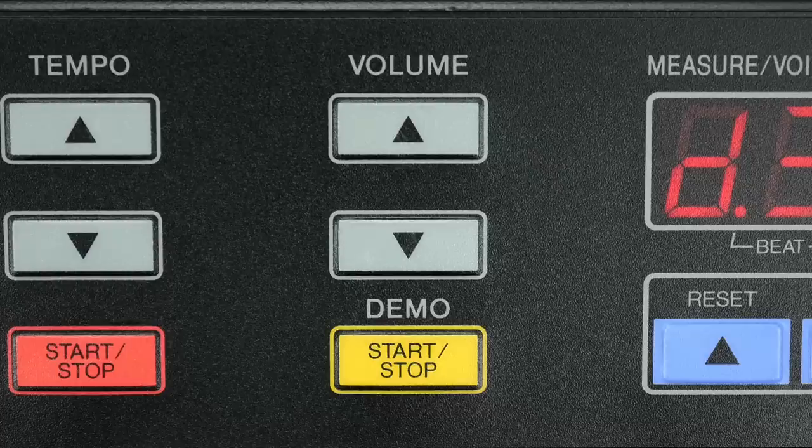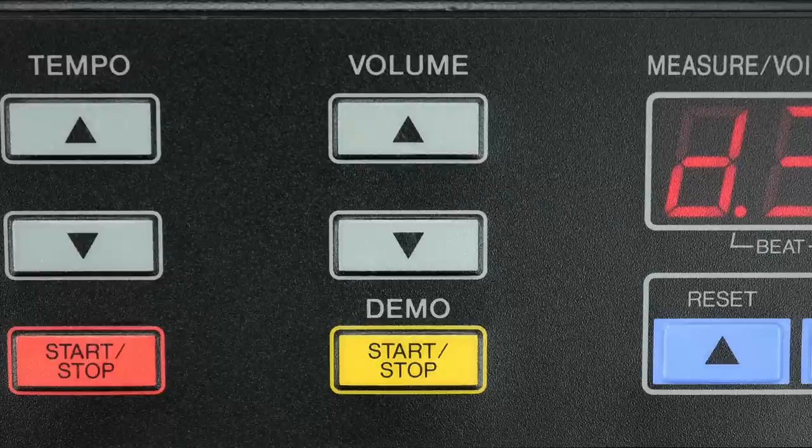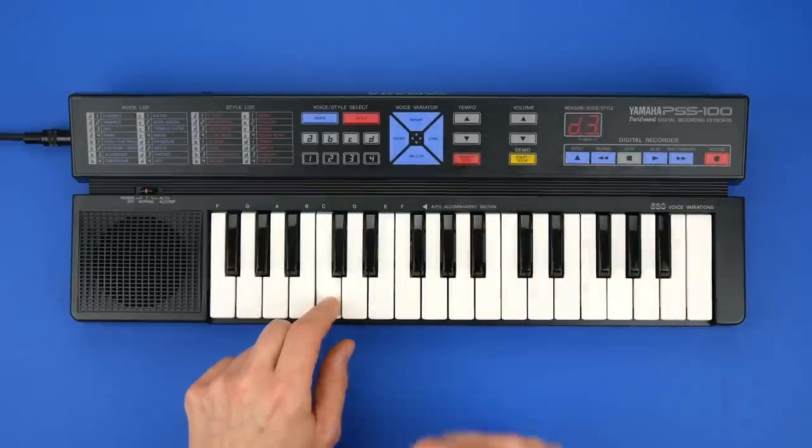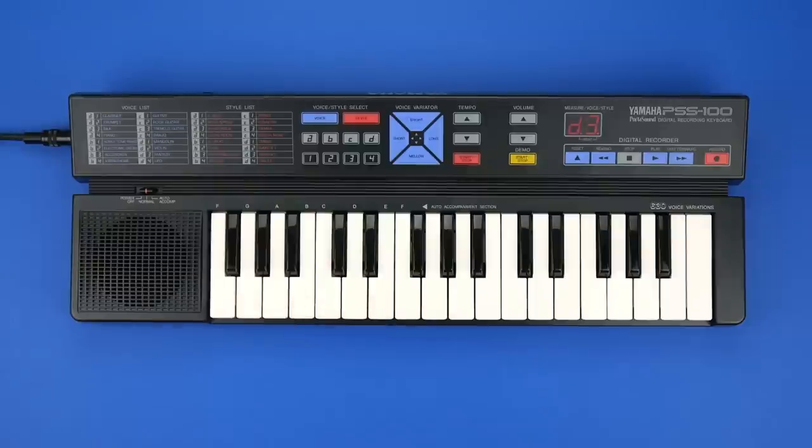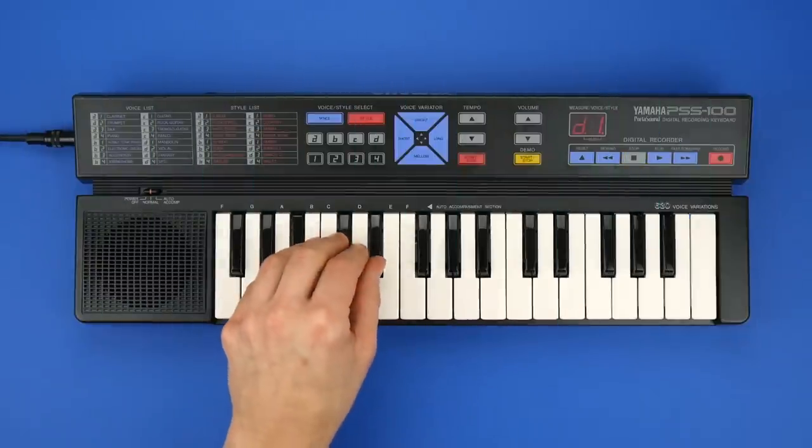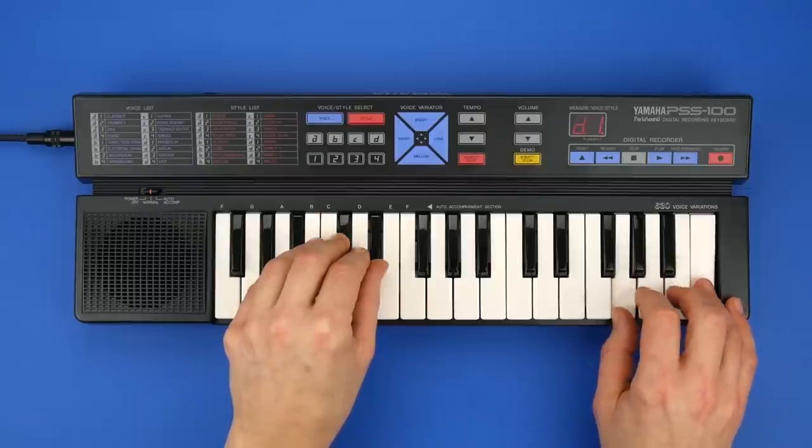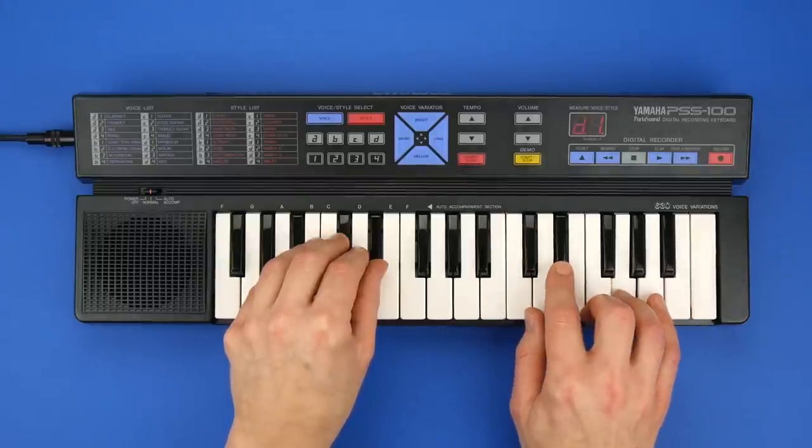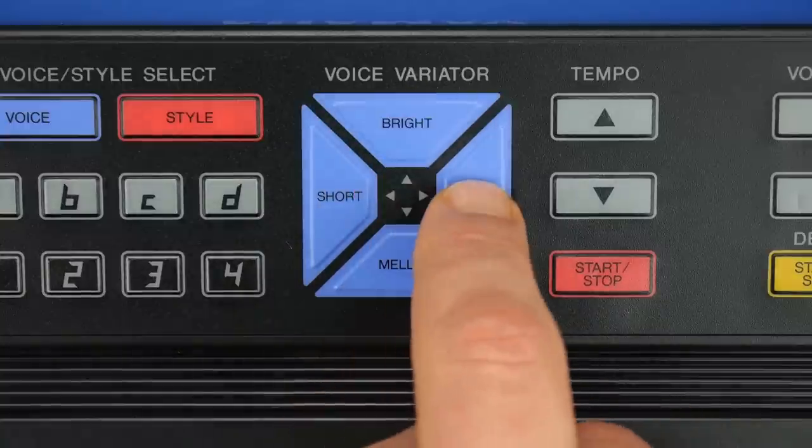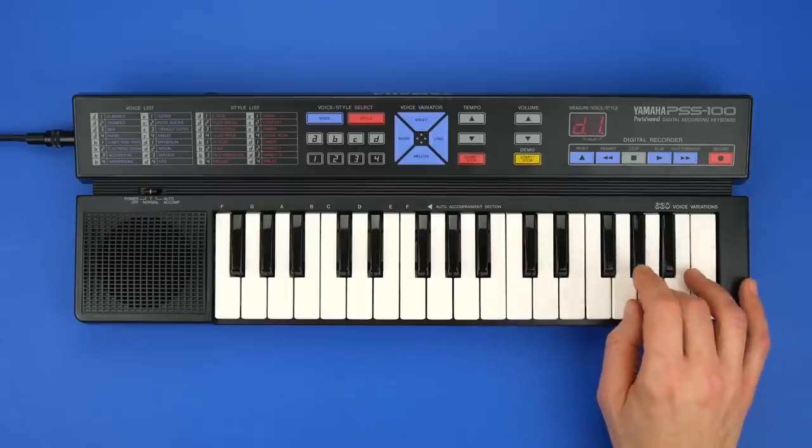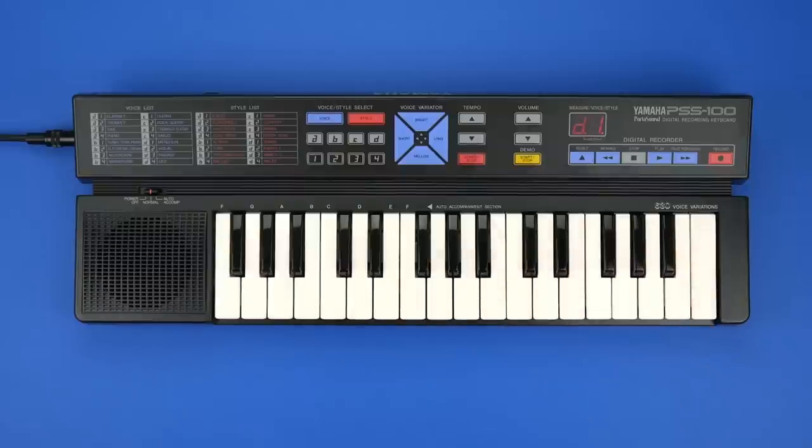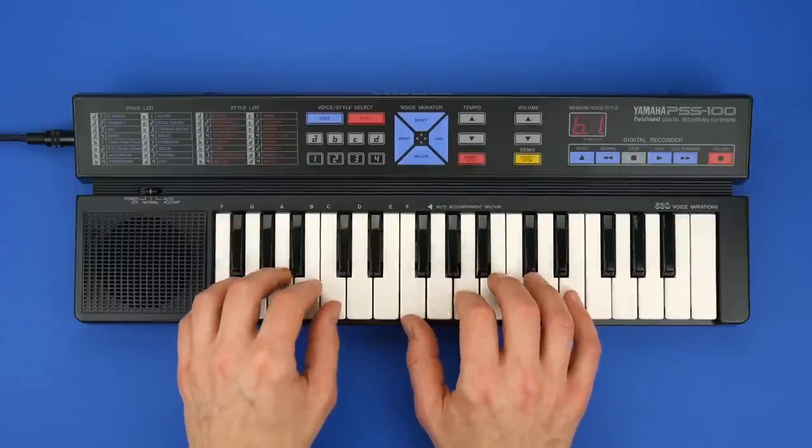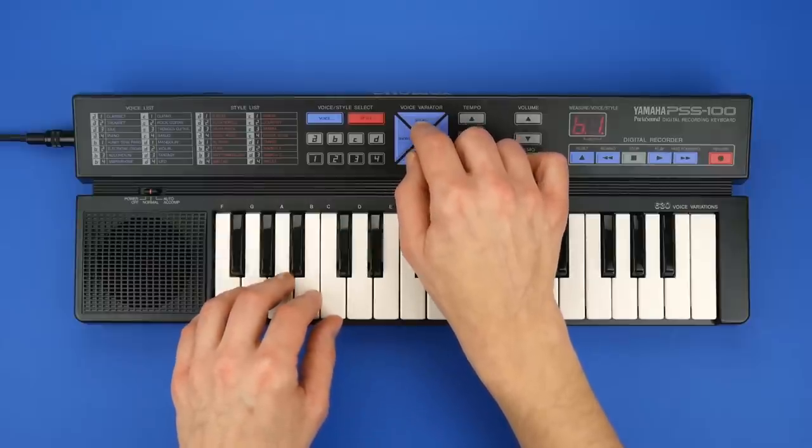This instrument is good to demonstrate how the volume control changes the sound. It has a really rough resolution. Only five steps. And you can clearly hear how the sound is getting shorter. You might use this as an extra effect. Mandolin. And the bright and mellow buttons don't change the waveform. They change the amount of detuning. Six steps are possible.